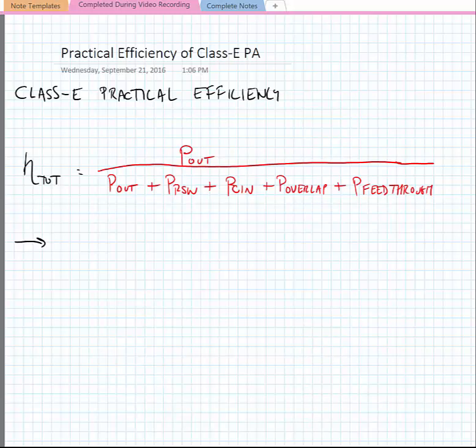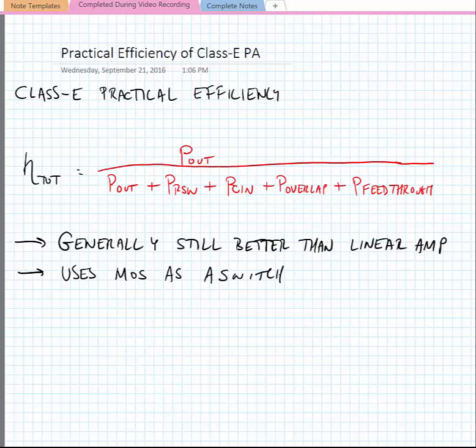Now this does degrade the efficiency below 100%, but still it's generally better than a linear amplifier. It is using the MOS device as a switch, which is what the MOS device is optimized to be. It's not optimized to be a current source.